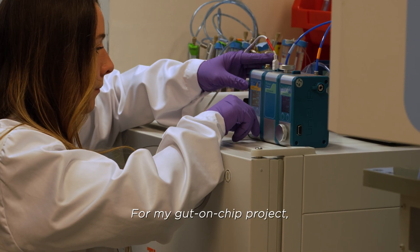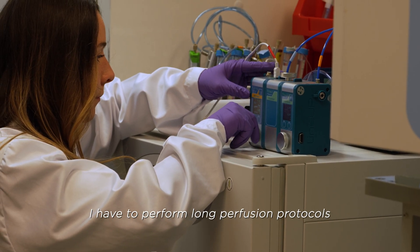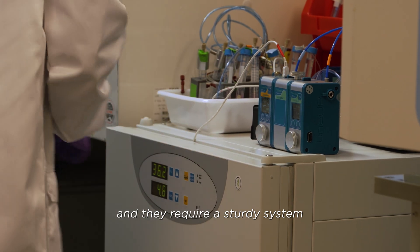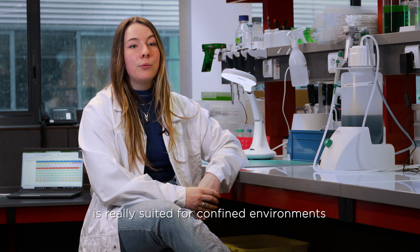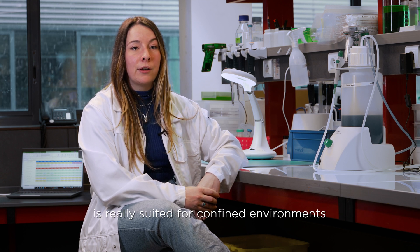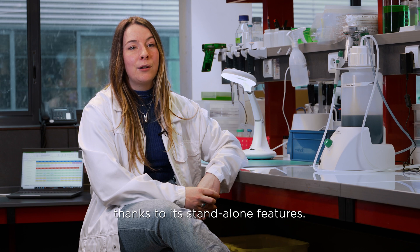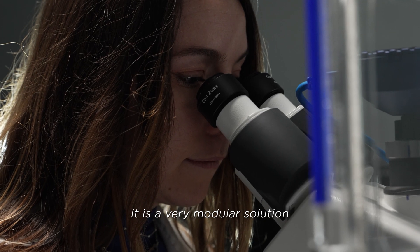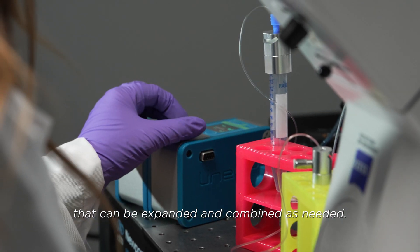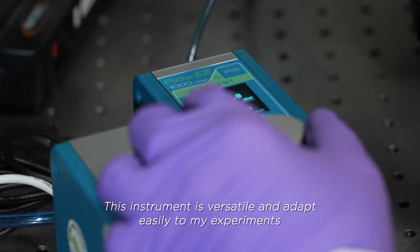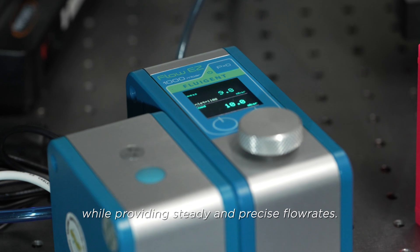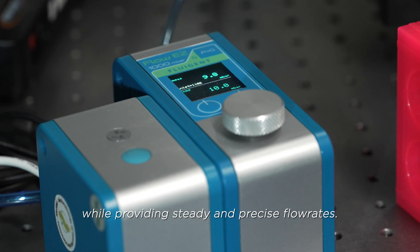For my gut-on-chip project, I have to perform long perfusion protocols and they require a sturdy system that can fit inside small culture rooms. The FlowEasy by Fluigent is really fitted for confined environments thanks to its standalone features. It is a very modular solution that can be expanded and combined as needed. This instrument is versatile and adapts easily to my experiment while providing a steady and precise flow rate.